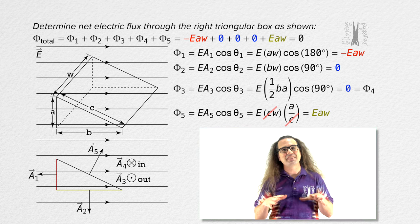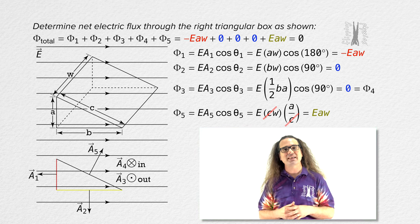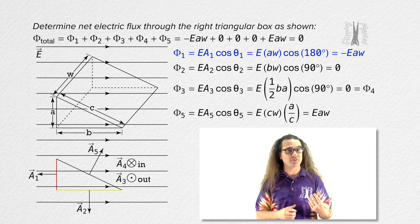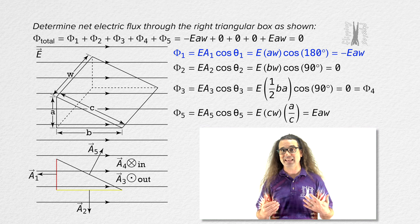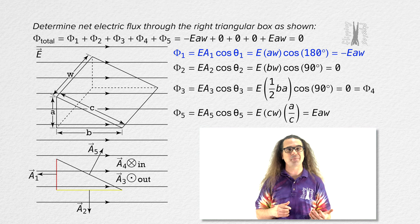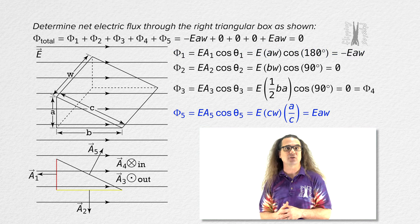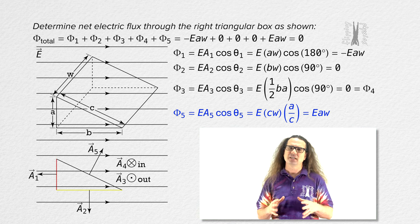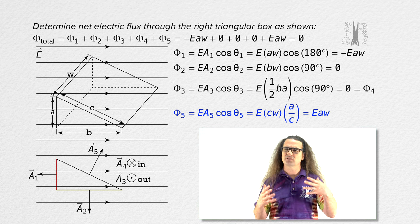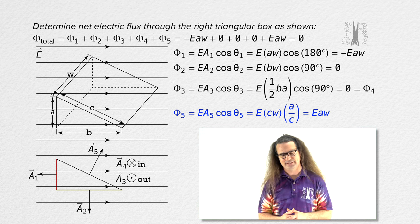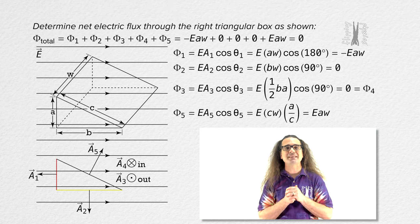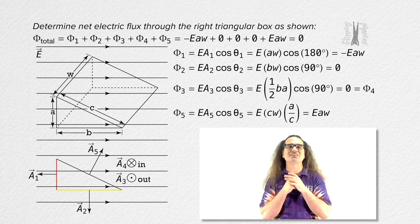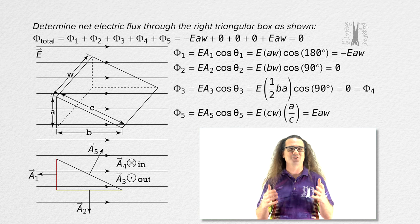Please notice that when an electric field is going into a closed surface, the electric flux is negative, and when an electric field is coming out of a closed surface, the electric flux is positive. It's just useful to realize that. Thank you very much for learning with me today — I enjoy learning with you.